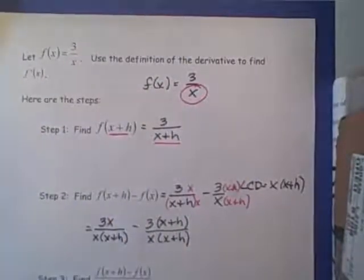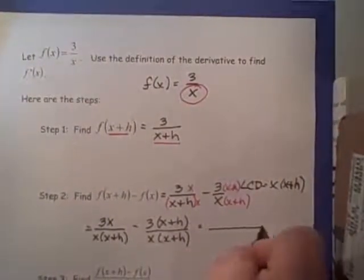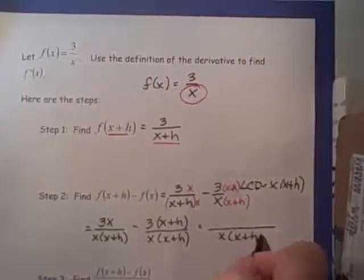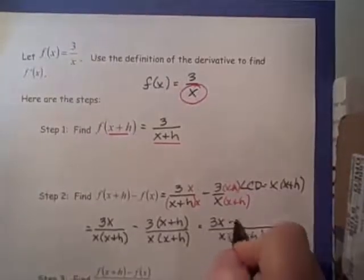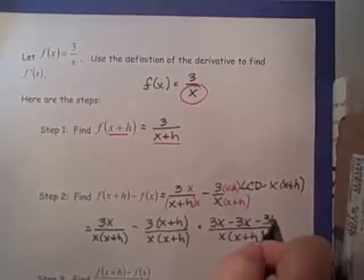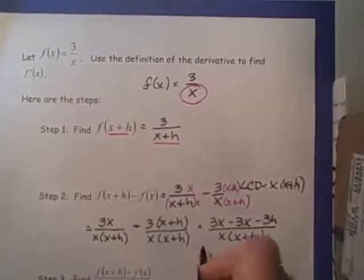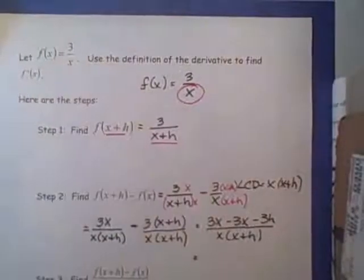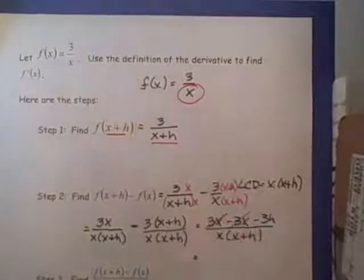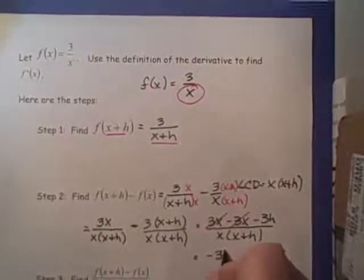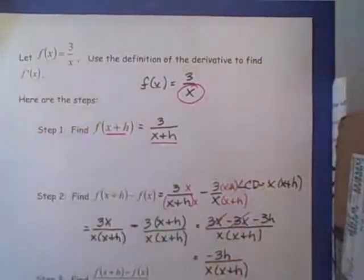Now we're ready to combine this into one fraction. The denominators are the same, so I have x times x plus h. The numerators are going to be 3x minus 3x minus 3h. Notice I was careful to distribute that negative sign across both terms. Remember how I said almost always something cancels? Sure enough, something cancels right there. I end up with negative 3h divided by x times x plus h.